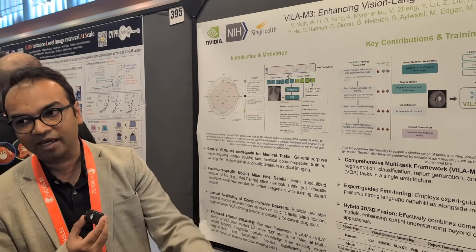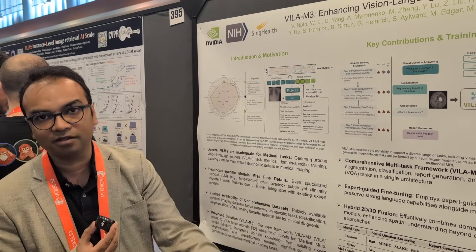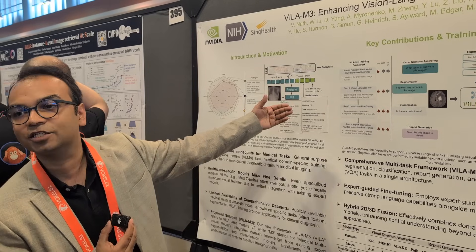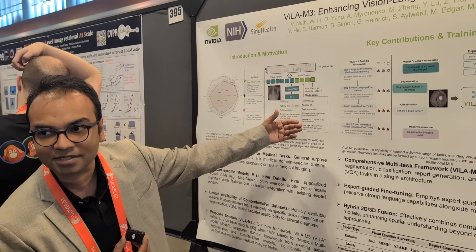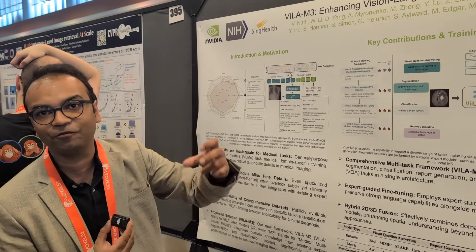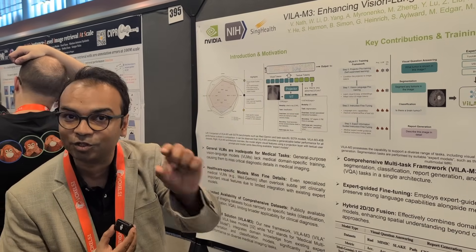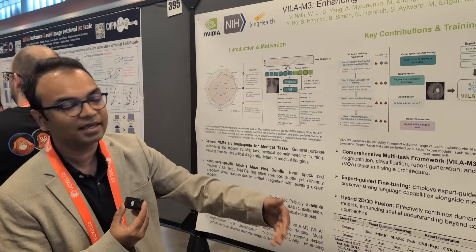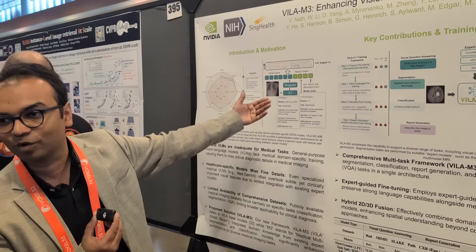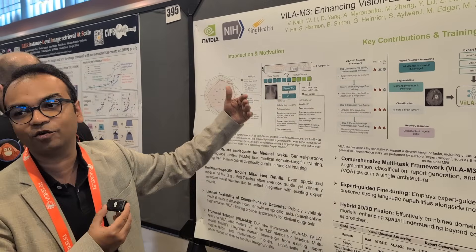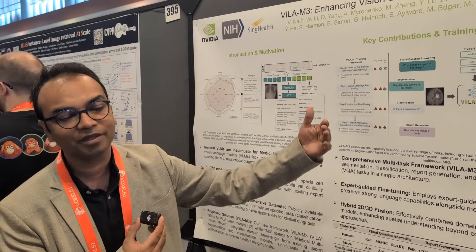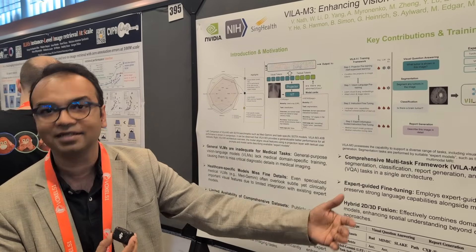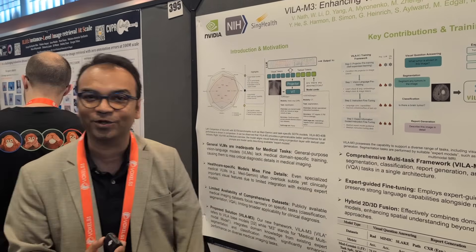One way to tackle the tailed problem is you take the smaller models that fit very well to that data and you make model cascades. That's what this work is about. And then you can get to effective responses of much larger models — that's the story in short.